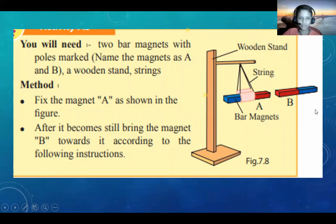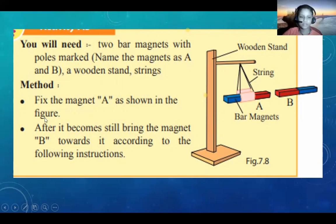This is activity 2. You will need two bar magnets with poles marked. Name the magnets A and B, and a wooden stand with strings. Let's learn the method: fix magnet A to the stand as shown in the figure. After it becomes still, bring magnet B towards it according to the following instructions.